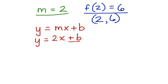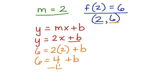But we do have an x-coordinate and we have a y-coordinate that can be substituted into this equation. 6 is equal to 2 times 2 plus b. 6 is equal to 2 times 2 which is 4 plus b.